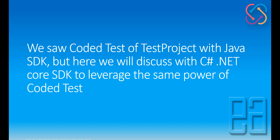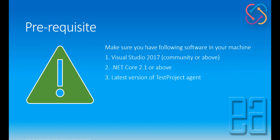We saw a coded test of test project with Java SDK, but here we are going to discuss the C-Sharp .NET Core SDK to leverage the same power of coded tests. Since this is C-Sharp .NET, there are going to be some new prerequisites. Make sure you have Visual Studio 2017 community edition or above, .NET Core 2.1 or above, and the latest version of the test project agent.